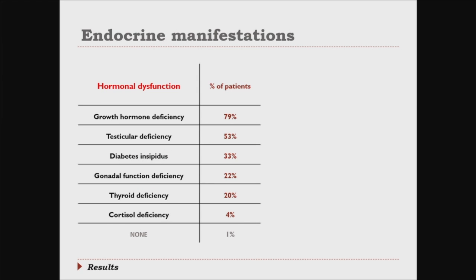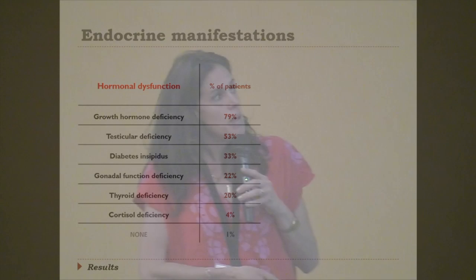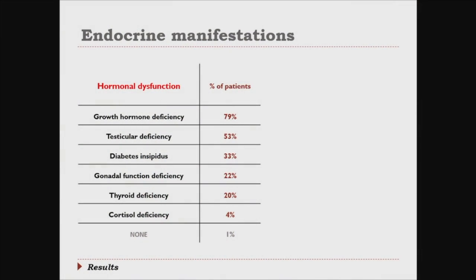We studied the patients we have in common with Julien Roche, and we found that the most frequent hormonal deficiency is growth hormone deficiency. In children, growth hormone deficiency prevents you from reaching your target height, but in adults it also has very important implications for regulation of metabolism, bone metabolism, cardiovascular metabolism, lipids, glucose, and the balance between muscular mass and fat mass. Almost 80% of patients have growth hormone deficiency in Erdheim-Chester disease. Testicular deficiency is very frequent in men — about half of the men have real testicular deficiency. Diabetes insipidus is seen in about a third of patients.